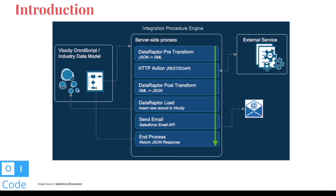In a nutshell, an integration procedure is your Apex class. If you're from a Salesforce background and have written Apex, this is your Apex class where you write all kinds of logic. You can have multiple Data Raptors, you can insert, delete, call out to third-party APIs, send emails, and a lot more. I would say IP is the most powerful back-end process for Omni Studio. Data Raptor is also a back-end process, but it just returns or transforms data, whereas IPs do much more.